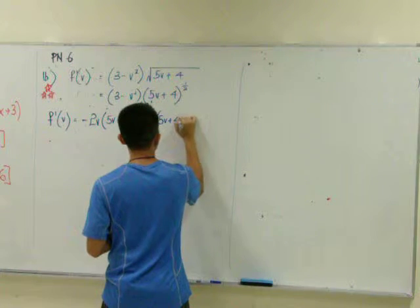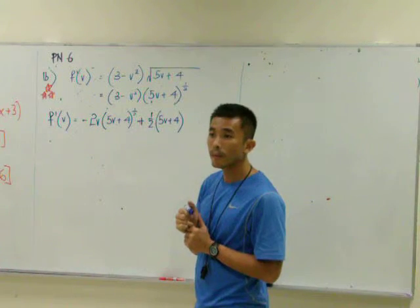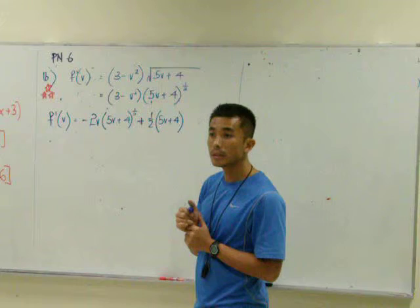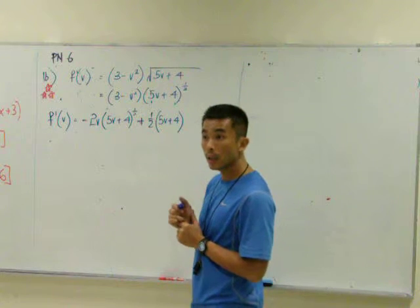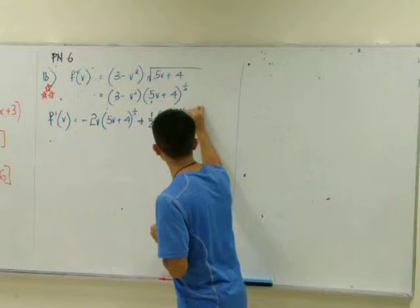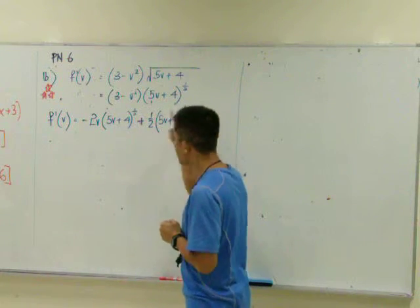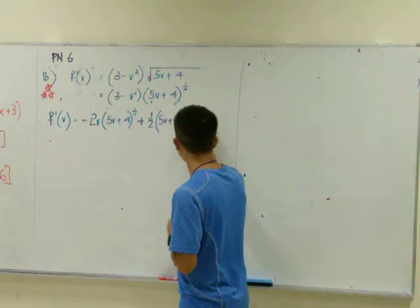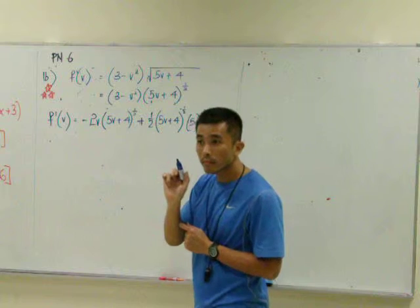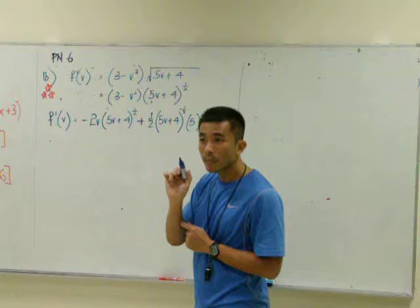Differentiate the second now. Can you help me do the differentiation for the second one? Half. Power half minus one is negative half, then differentiate inside I get 5. Are we done? No.